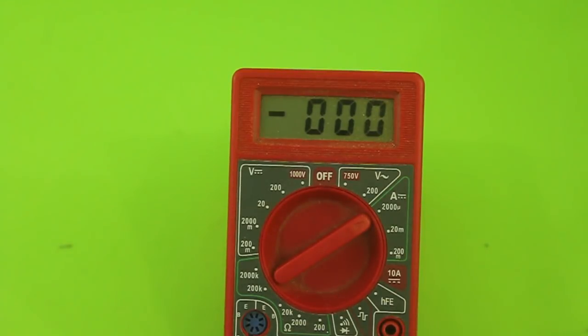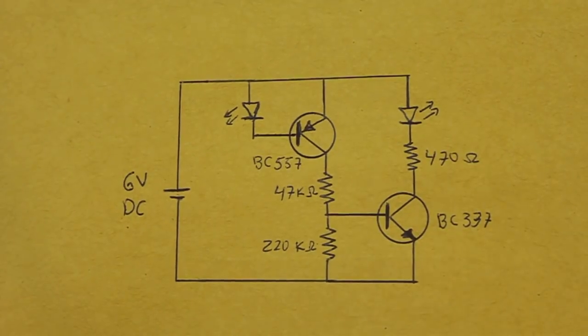So we have first to amplify the current from the LED. And here's the circuit.